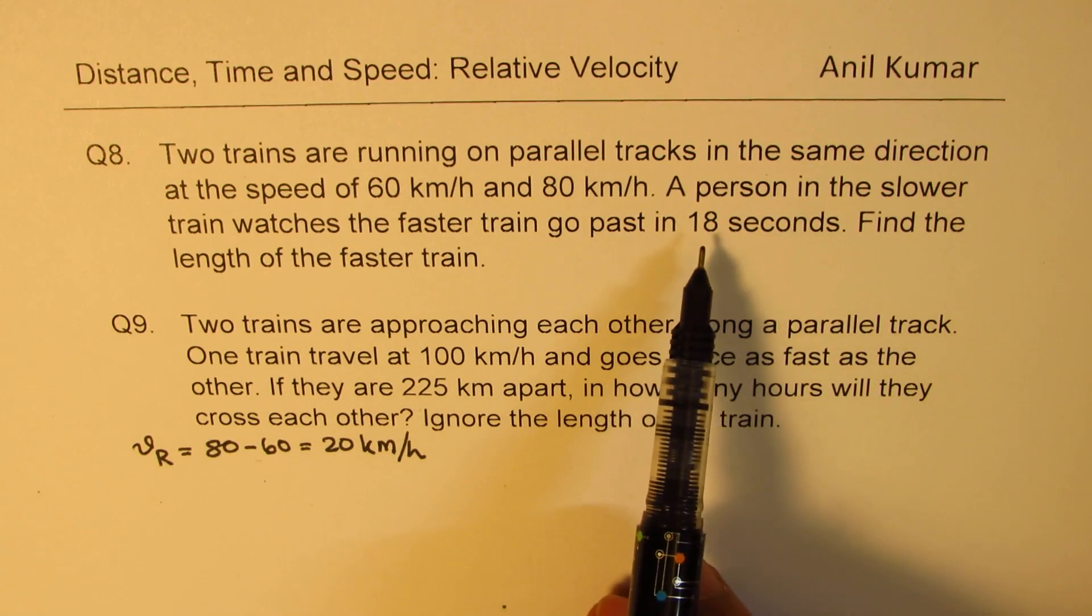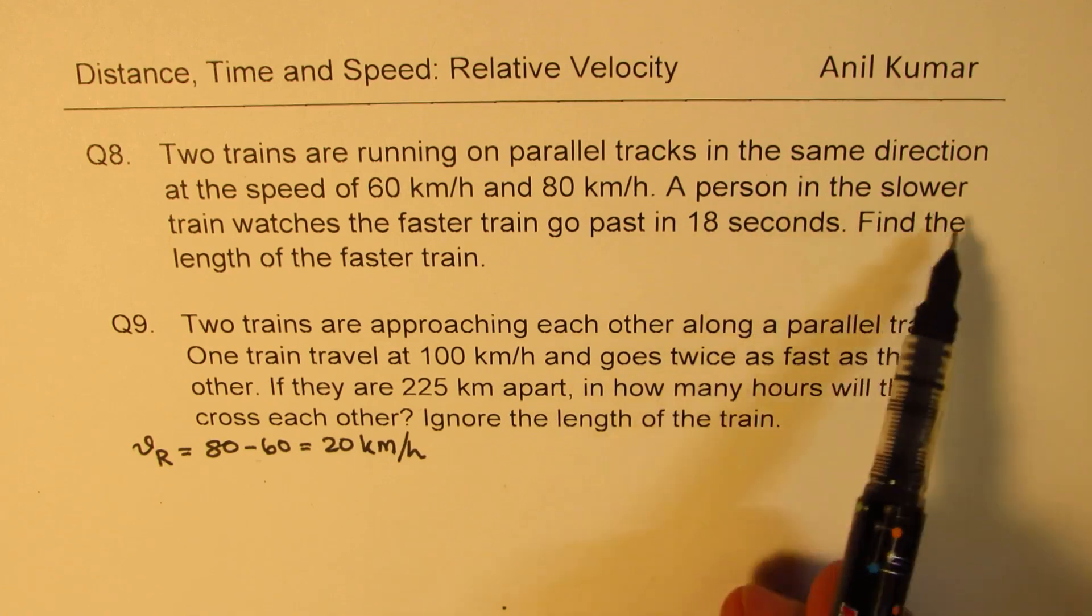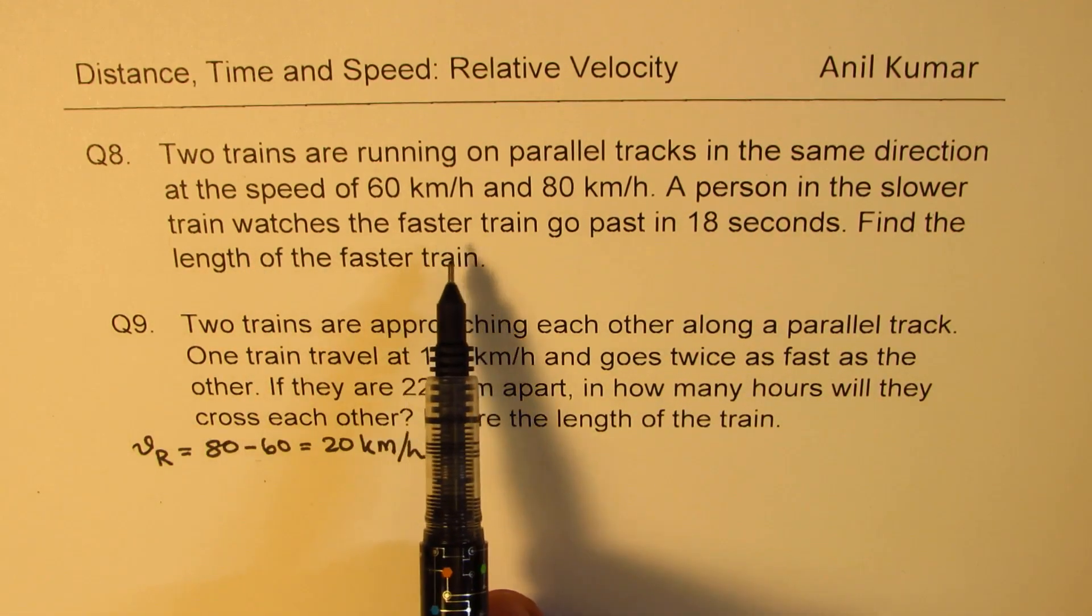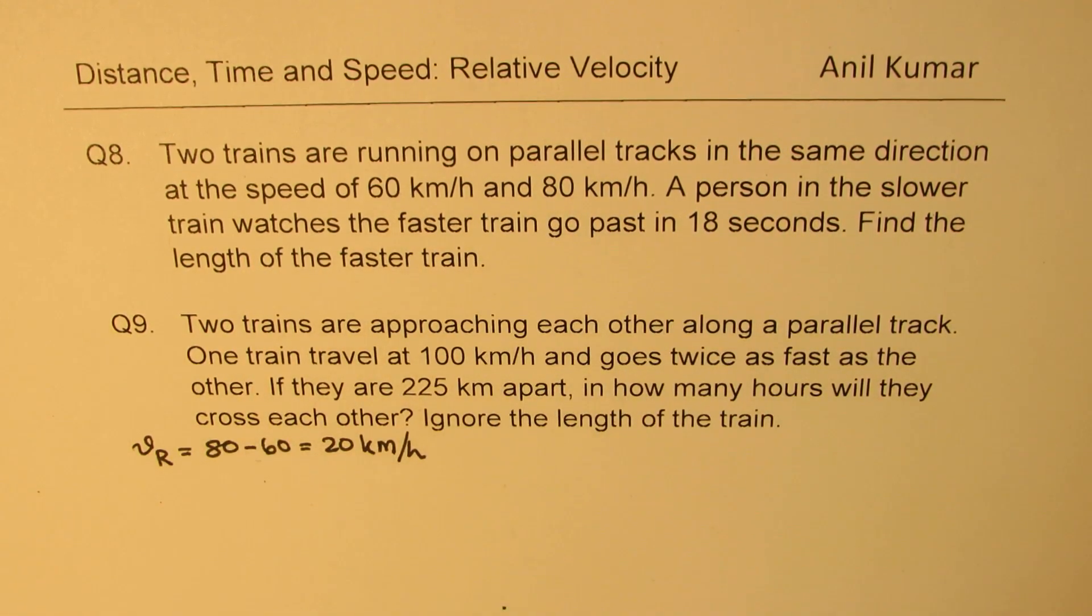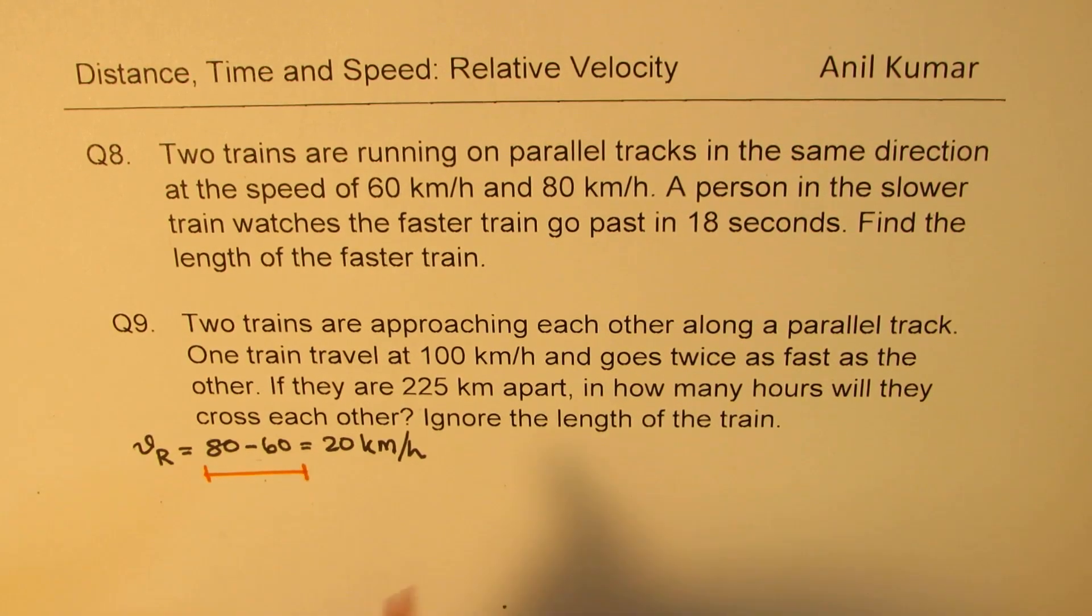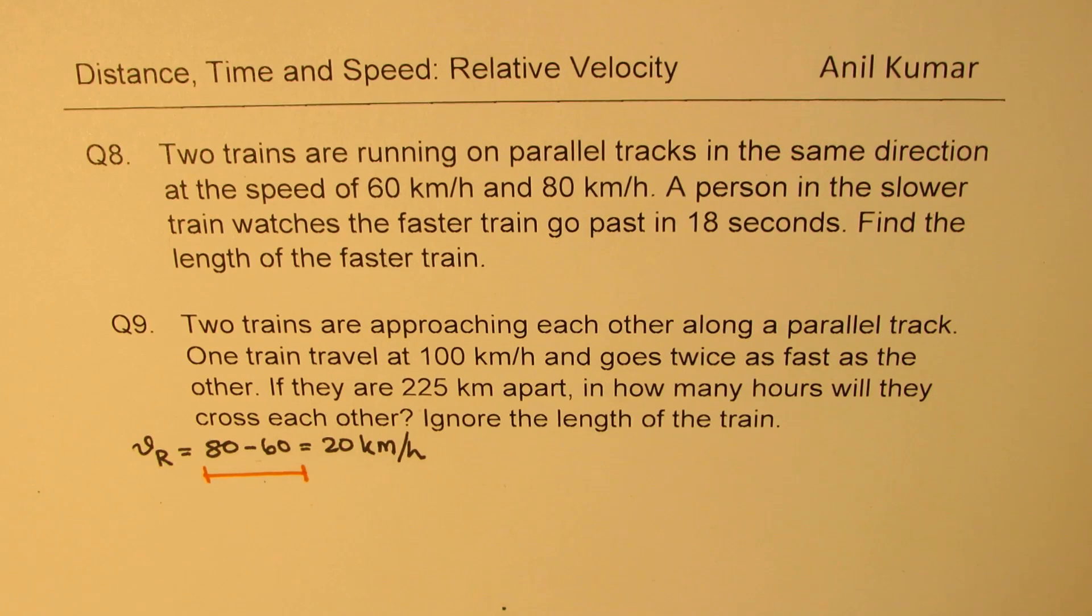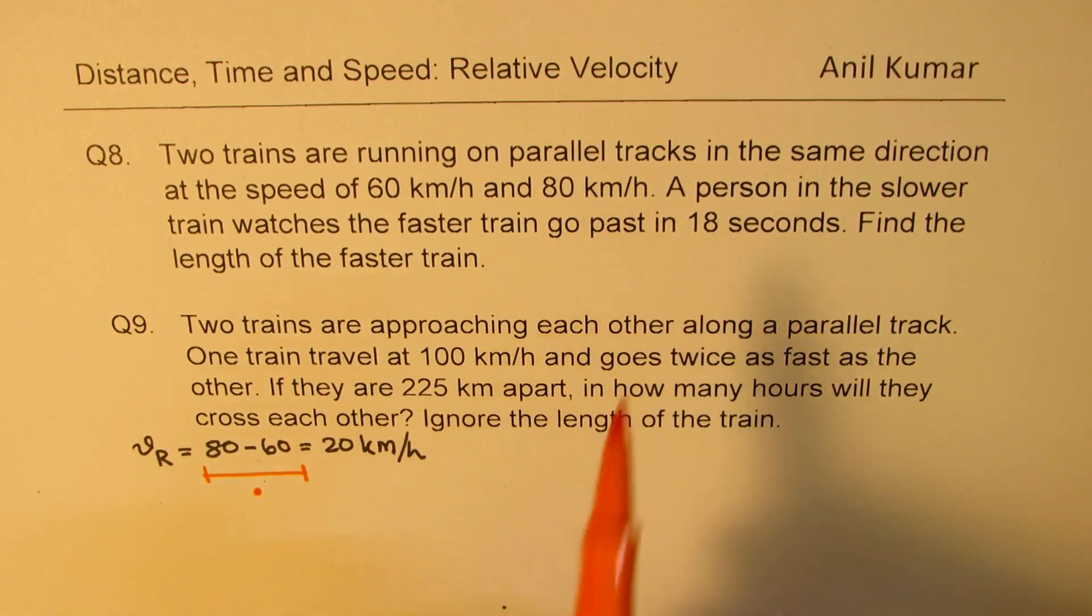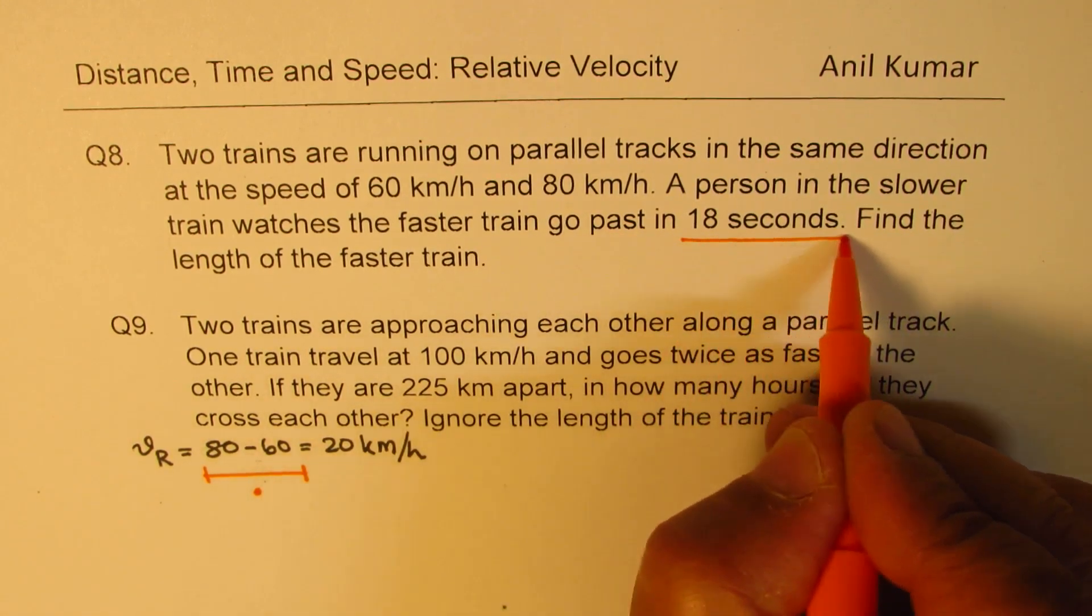Since we are talking about 18 seconds, a person in the slower train watches the faster train go past in 18 seconds. So what goes past is the length of the train. L, the length of the train, is being considered, and a person sitting in the slower train sees the whole train passing by in 18 seconds.